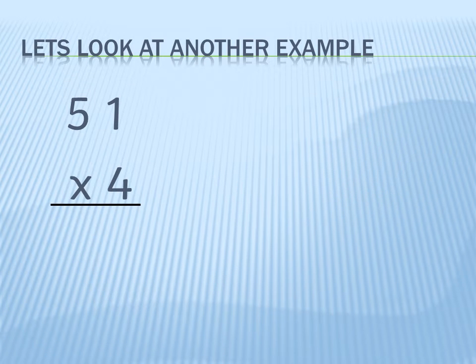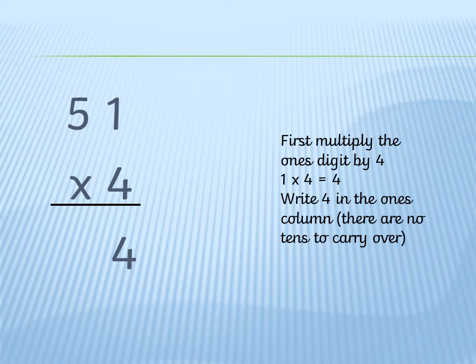Let's look at another example. 51 times 4. First we multiply the ones digit by 4, so 1 times 4. We write the answer in the ones column. In this calculation there is no 10 to carry over.